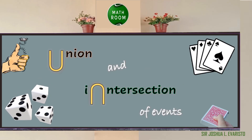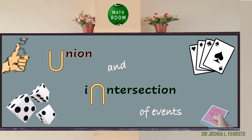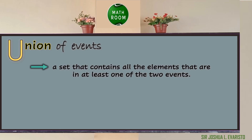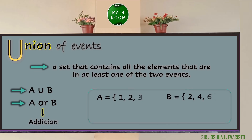Let us now talk about union and intersection of events. Union is a set that contains all the elements that are in at least one of the two events. Union is denoted by A union B, which means A or B. In probability, the conjunction OR means addition. For example, if event A consists of {1, 2, 3} and event B consists of {2, 4, 6}, then to find A union B, we write the outcomes of event A — 1, 2, 3 — and the outcomes of event B — 4 and 6 — but we do not write 2 again since it is already present. Therefore, A union B = {1, 2, 3, 4, 6}.